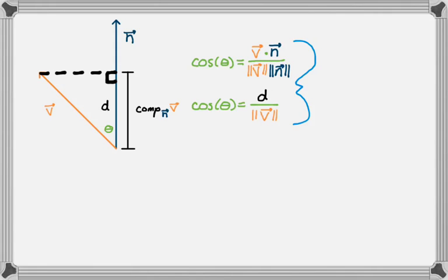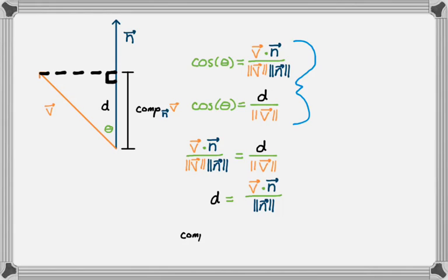And using a right triangle, I could say that cosine of theta is D over the magnitude of V. And then they're both equal to cosine of theta. So if I set them equal to each other, I'm going to get this, which you could probably take it from here, but I'll finish anyway. And then I can multiply by the magnitude of V. And I get that. And that is the component of V along n.